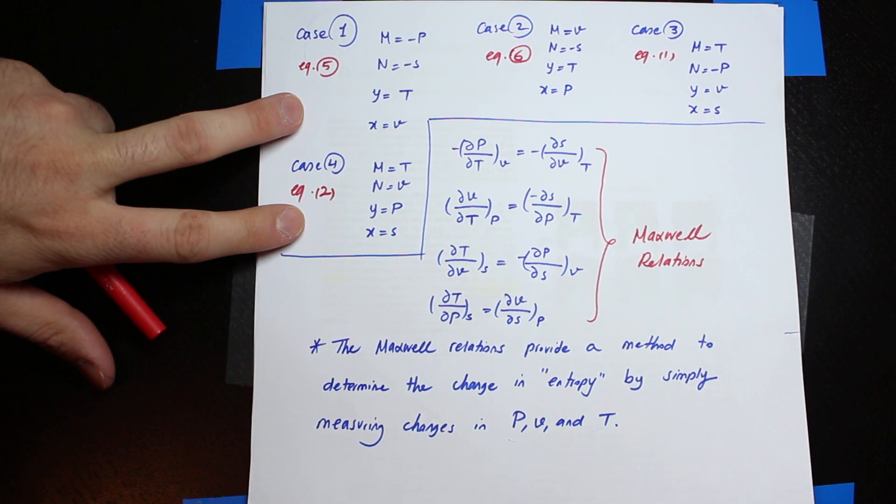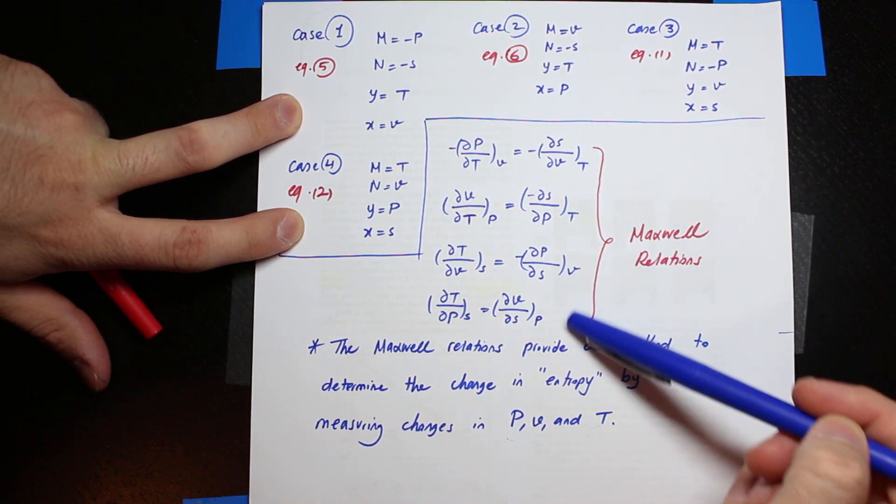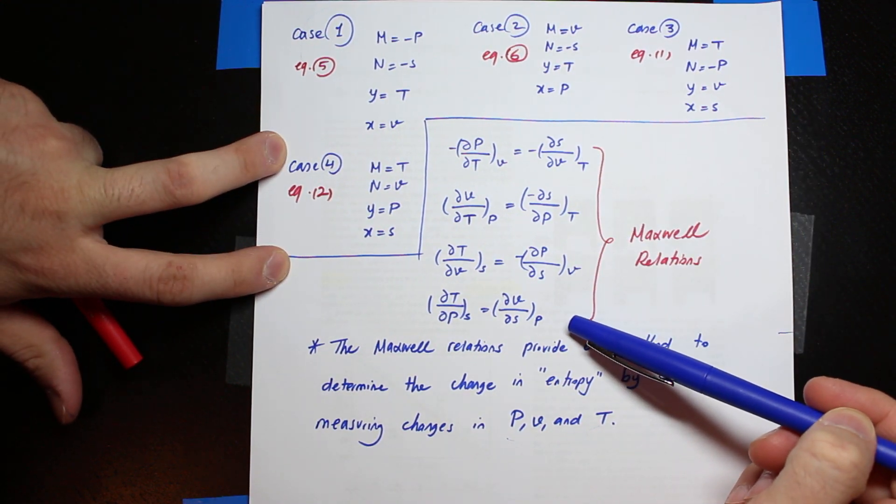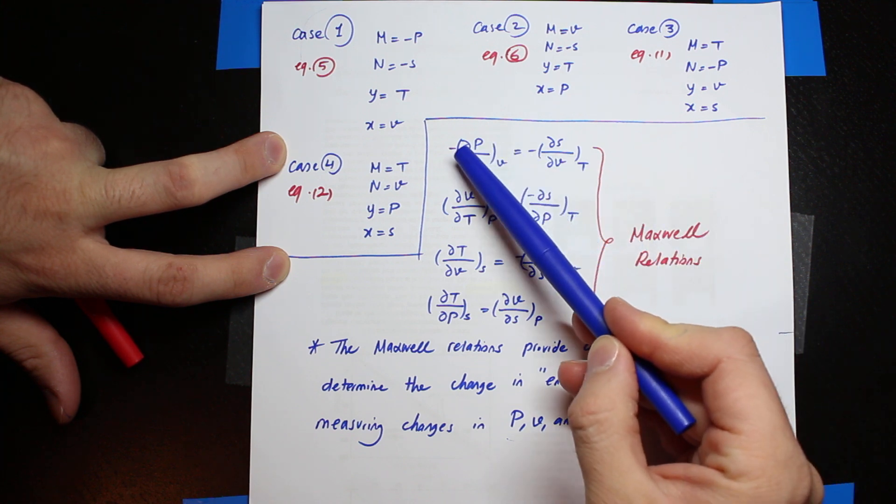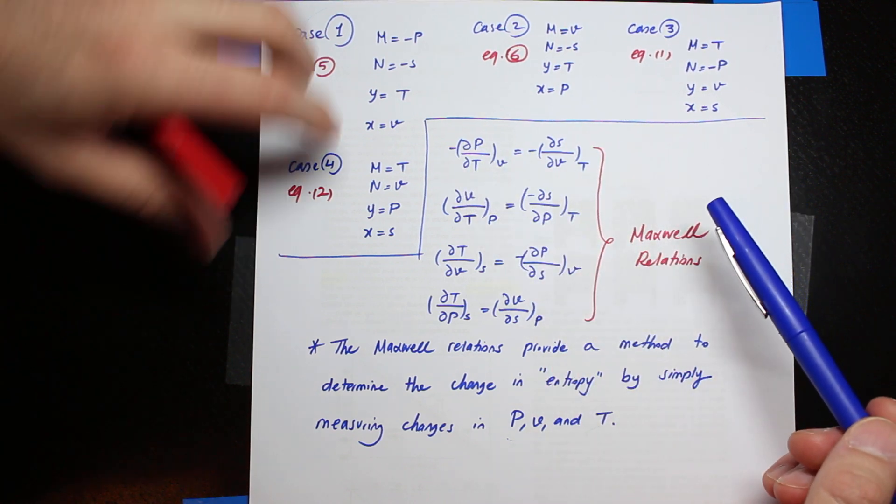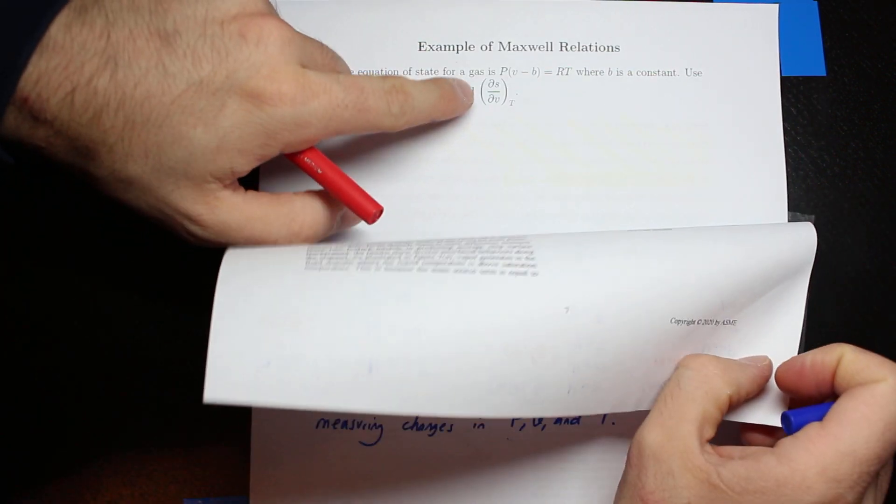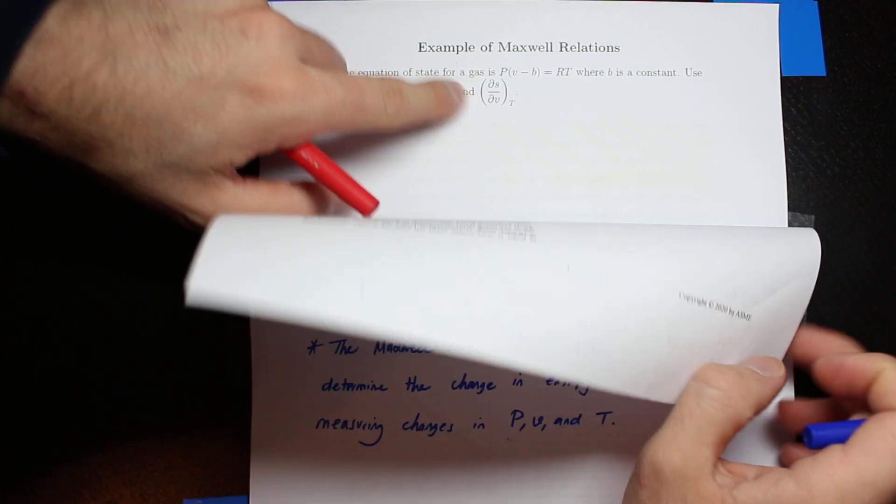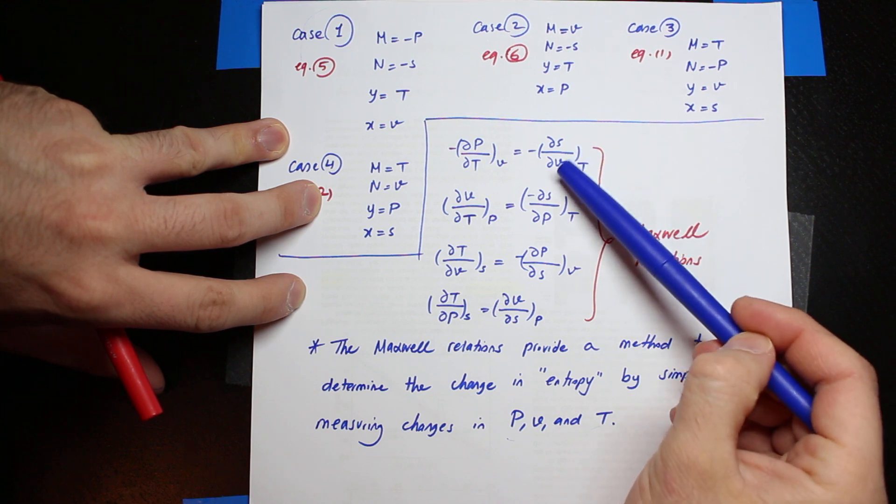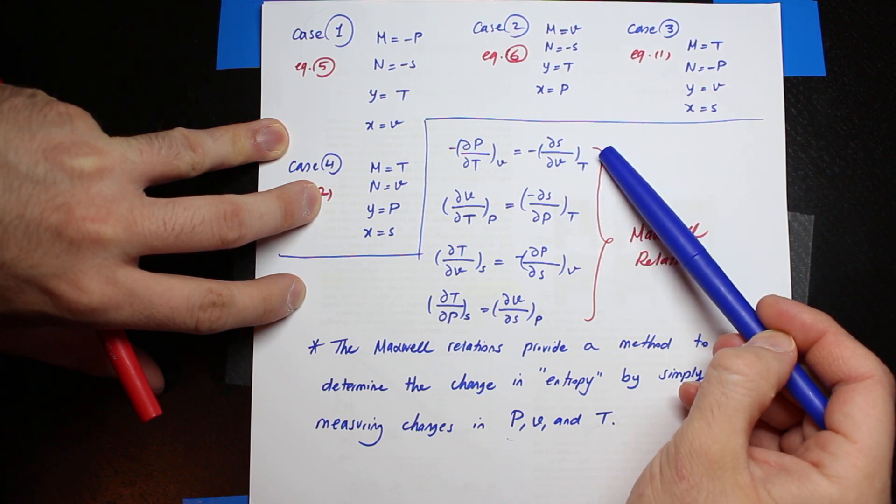We discussed Maxwell relations earlier in another video, but basically we have four Maxwell relations. What we are going to do today is use this equation, the very first one, because the question is asking for ∂S/∂V when the temperature is constant, which is basically the right-hand side of the very first equation.